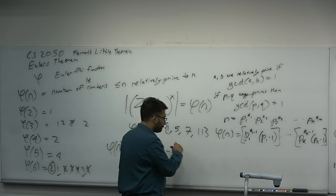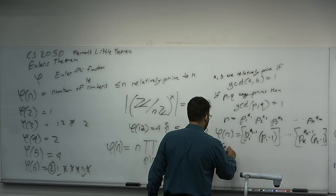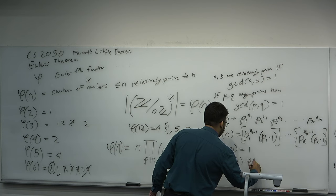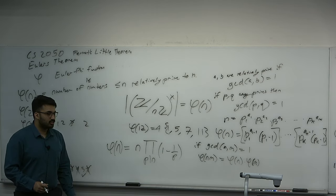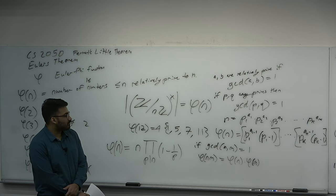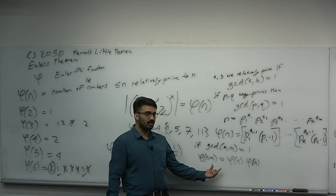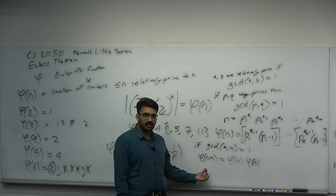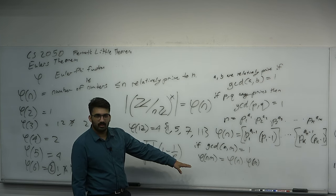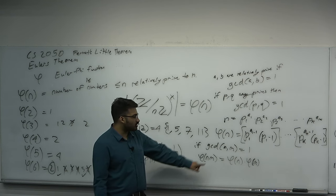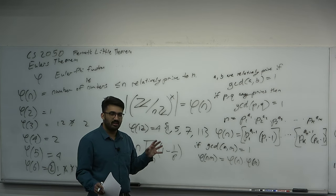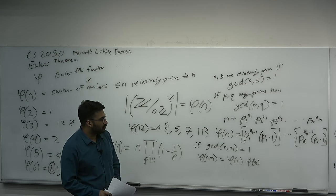One more property of the Euler phi function: if GCD(n, m) = 1, then φ(nm) = φ(n) · φ(m). Euler phi is what's considered a multiplicative function — a few functions have a property like this, similar to how log(ab) = log(a) + log(b). You can only split it this way if GCD(n, m) = 1 — if n and m are relatively prime. For example, you can split prime powers up this way.